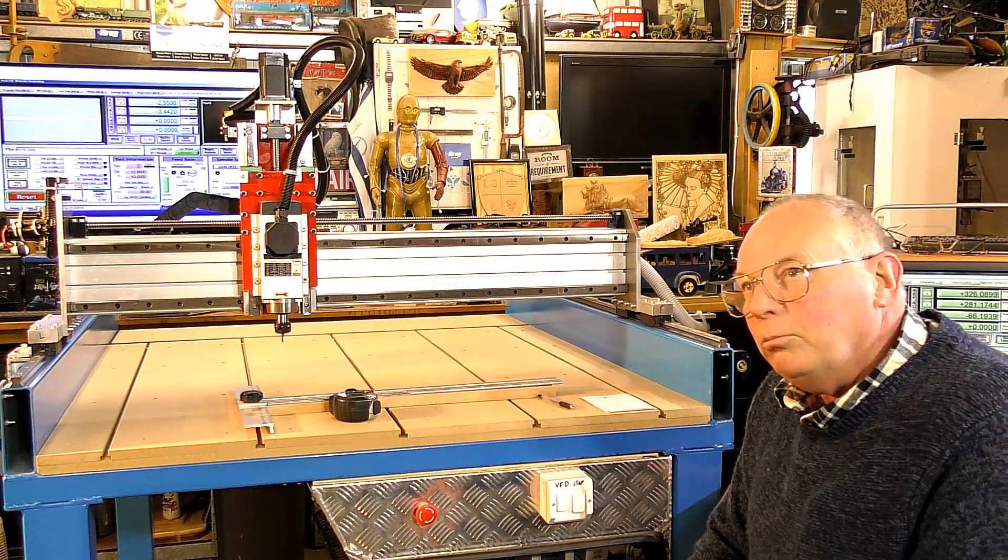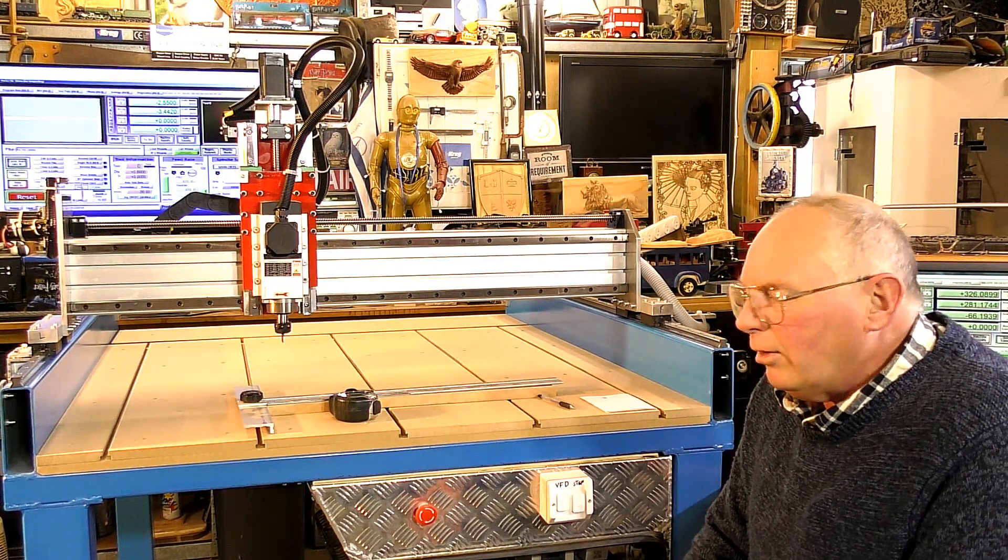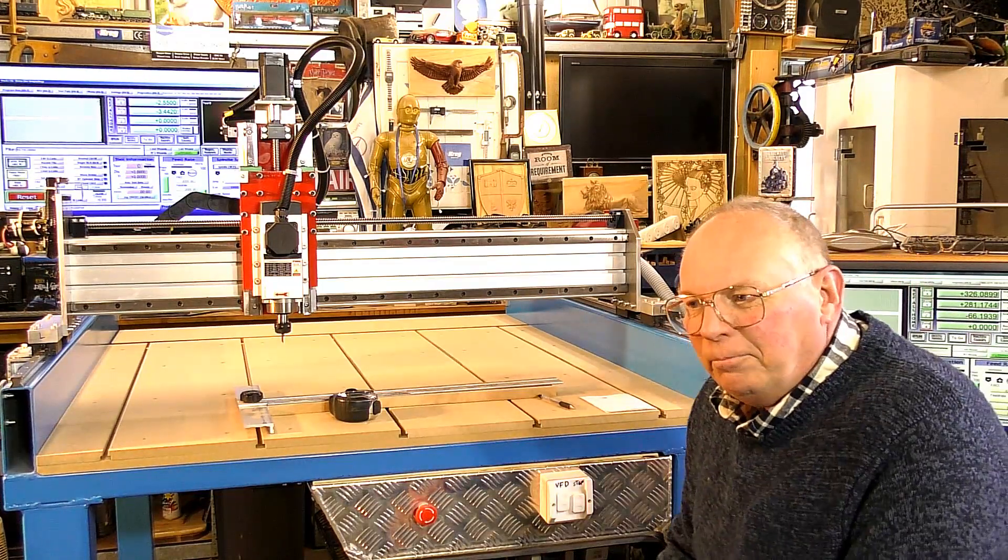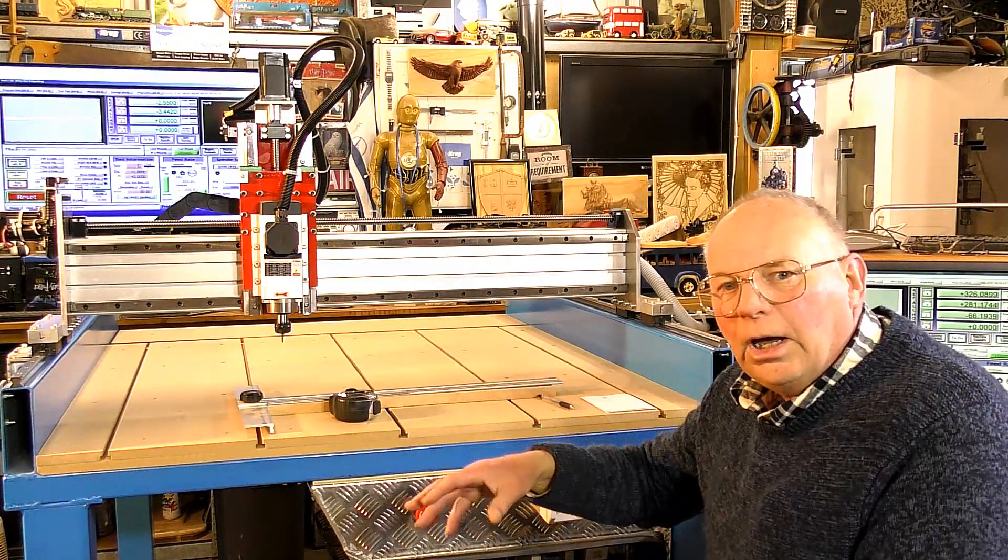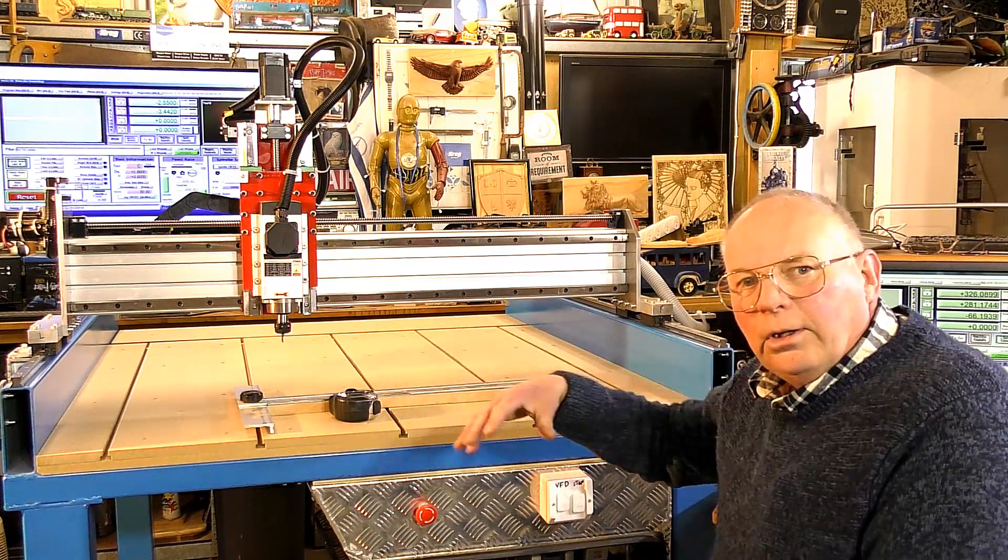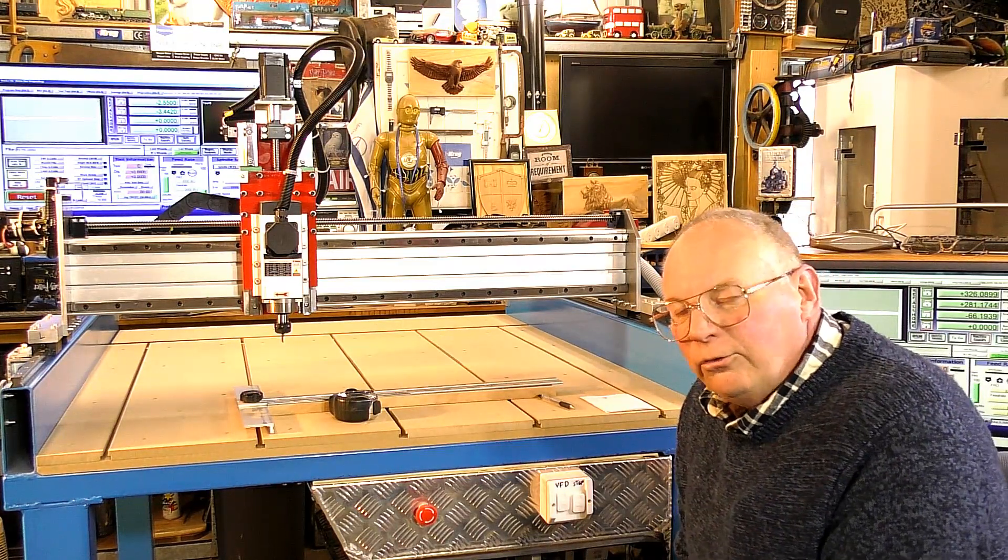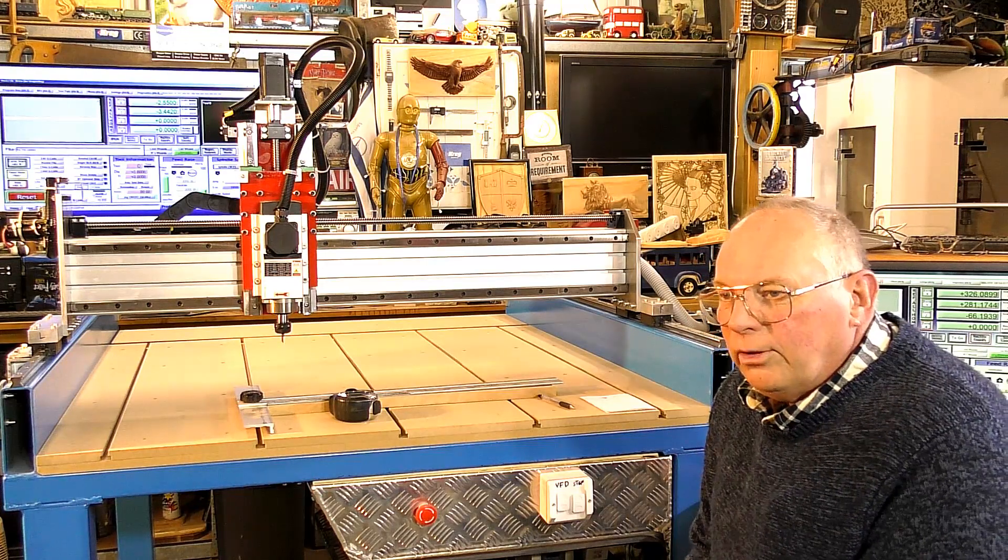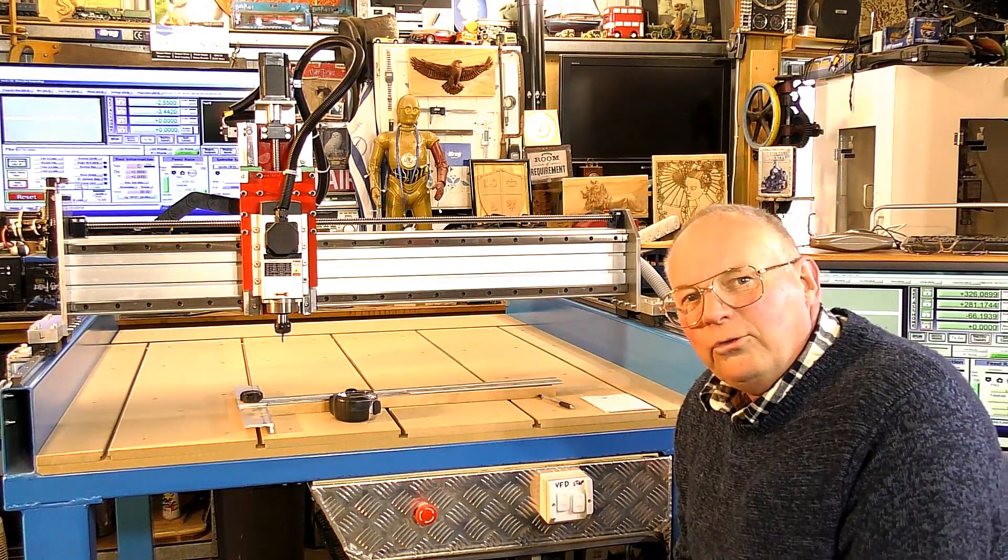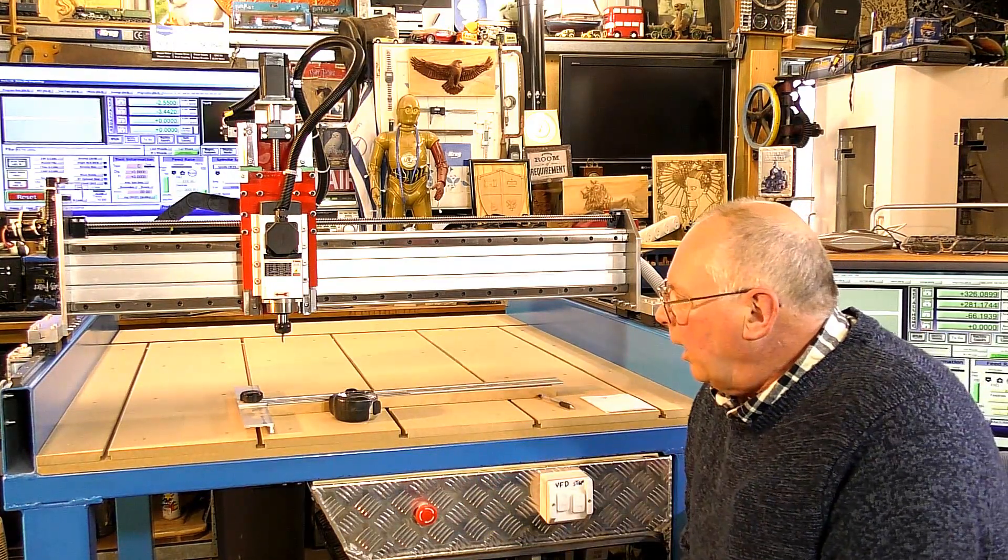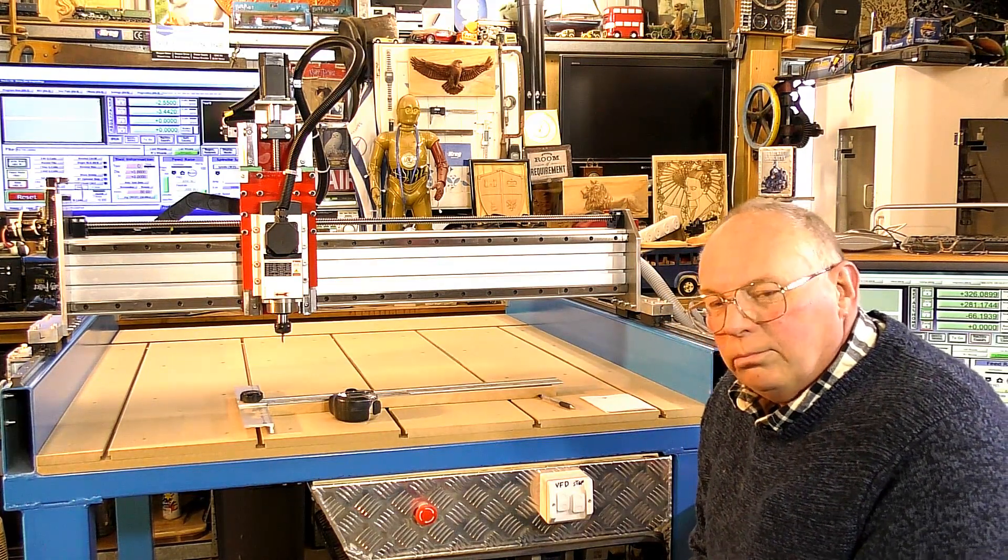For 0.01 of a millimeter to get it really accurate. But really and truly, a CNC router when you're machining 3D art or 2.5D work, you work within the nearest half millimeter. There's no need to go terribly accurate unless you're cutting a pocket in a piece of aluminum to put a bearing in. There's no need to go within a thou or so.